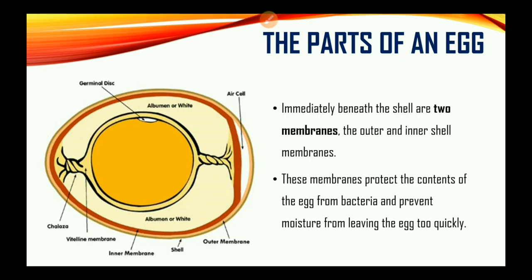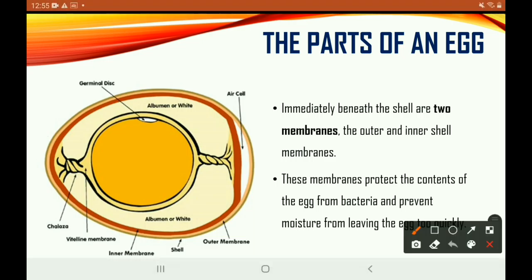Immediately beneath the shell are two membranes — the outer and inner shell membranes. These membranes protect the contents of the egg from bacteria and prevent moisture from leaving the egg too quickly. Based on this image, let us see if we can find the inner and outer membranes.